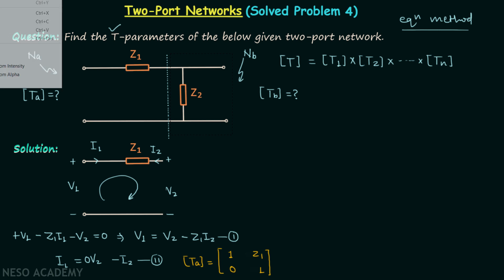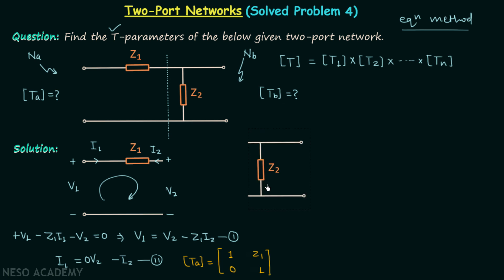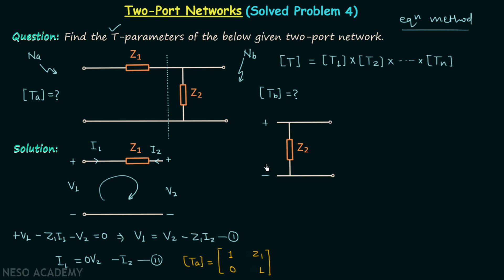I will copy network NB and then perform its analysis. Let's say the input voltage is V1, the output voltage is V2, the input current is I1, and the output current is I2. We can find the current in this branch; the current will be equal to V2 divided by Z2.